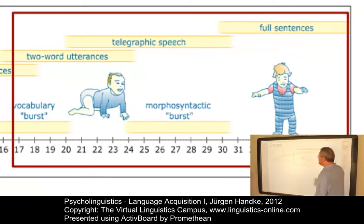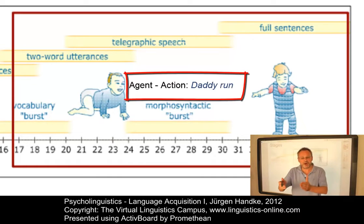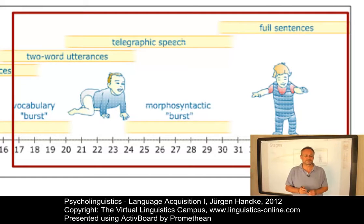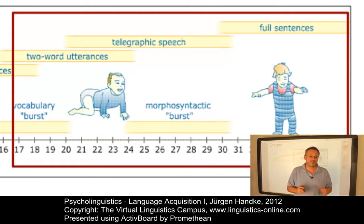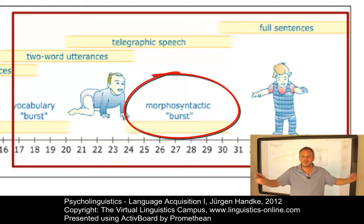At the same time, these new elements are combined into more complex constructions and the child gradually uses sentence-like structures — first in terms of two-word utterances, where two words are combined expressing various semantic relationships such as agent or action, as in 'daddy run.' Then again a burst — a morphosyntactic burst — where we discover an enormous increase of inflectional and functional elements. Once children have acquired two-word utterances, they start to add function words and grammatical inflections. The age of 24 to 30 months has been identified as a period where most children show a flowering of morphosyntax.